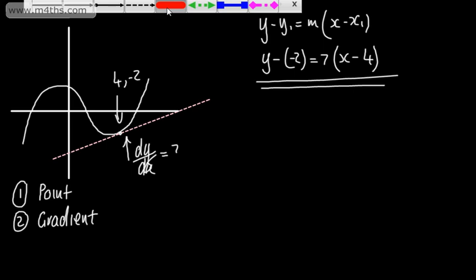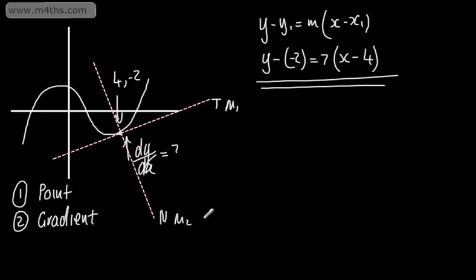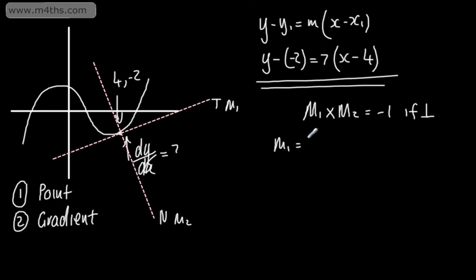What we're now going to consider is the normal. The normal is perpendicular to the tangent. So if I drew a normal, it would be at right angles with the tangent through that given point. As these are at right angles, if the gradient of the tangent is m₁ and the gradient of the normal is m₂, we can say m₁ multiplied by m₂ is equal to negative 1, as they're perpendicular.